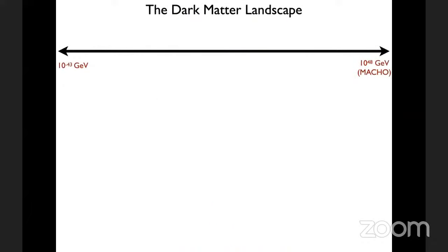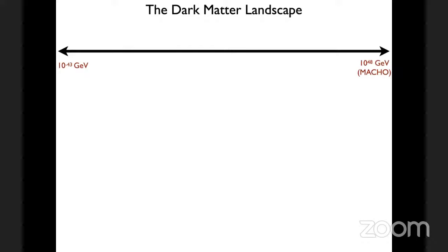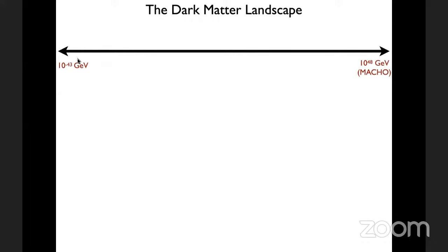Before talking about what kinds of dark matter we can find, let's ask an observational question: what do we know about the mass of dark matter? Naively, the mass has to be larger than 10^-43 GeV because that is the Hubble scale. If you have a particle in the universe, its mass had better be larger than the Hubble scale, otherwise it wouldn't count as a particle.